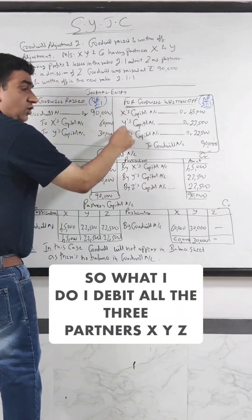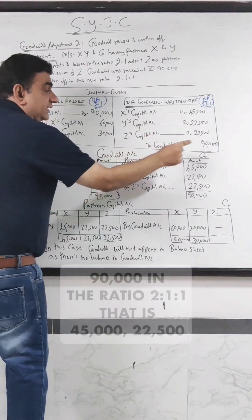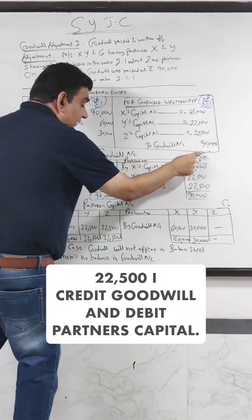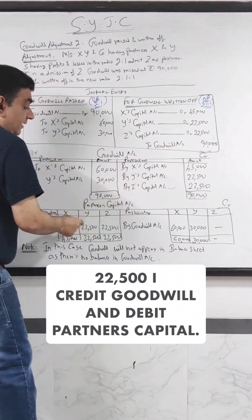So what I will do, I debit all the three partners XYZ, 90,000 in the ratio 2-1-1 that is 45,000, 22,500, 22,500, I credit goodwill and debit partners capital.